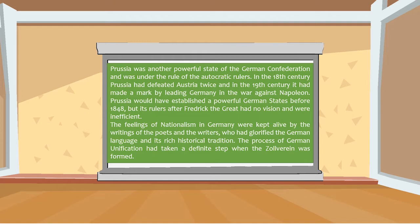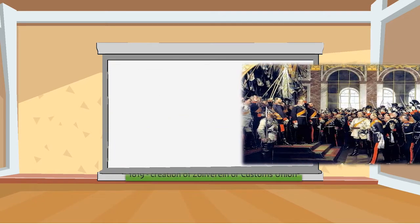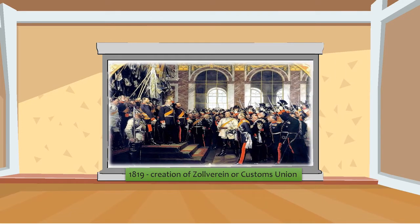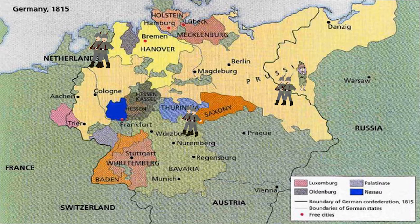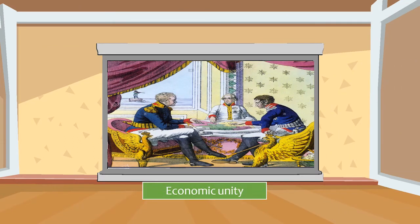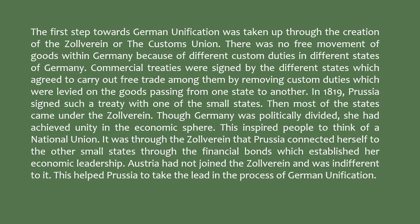The process of German unification had taken a definite step when the Zollverein was founded. The first step towards German unification was taken through the creation of the Zollverein, or the customs union. There was no free movement of goods within Germany because of different custom duties in different states. Commercial treaties were signed by different states agreeing to carry out free trade among them by removing custom duties levied on goods passing from one state to another. In 1819, Prussia signed such a treaty with one of the small states, and then most states came under the Zollverein.